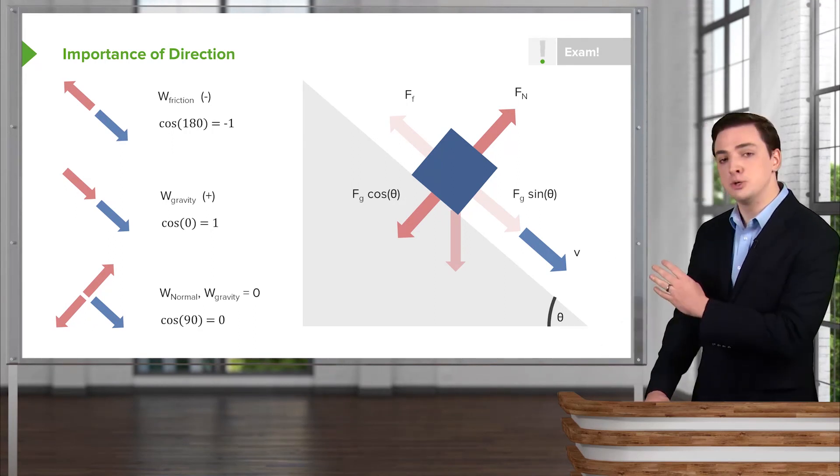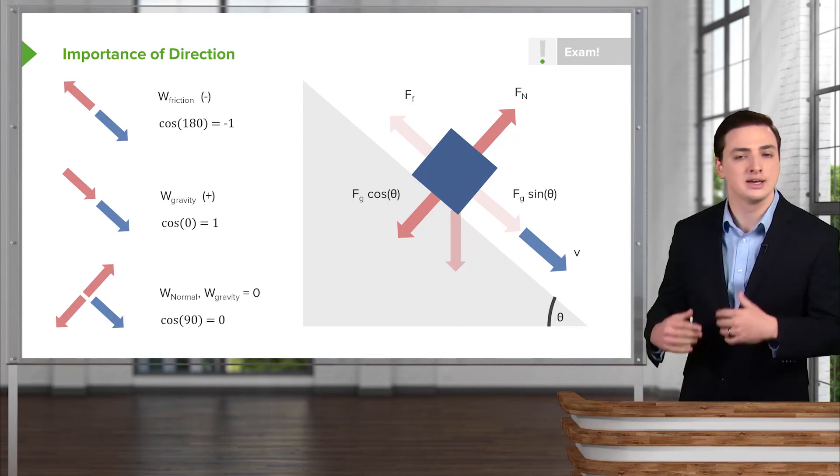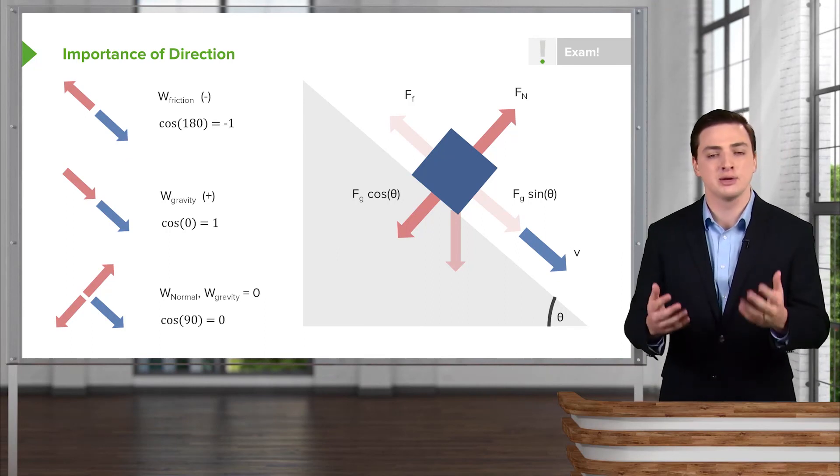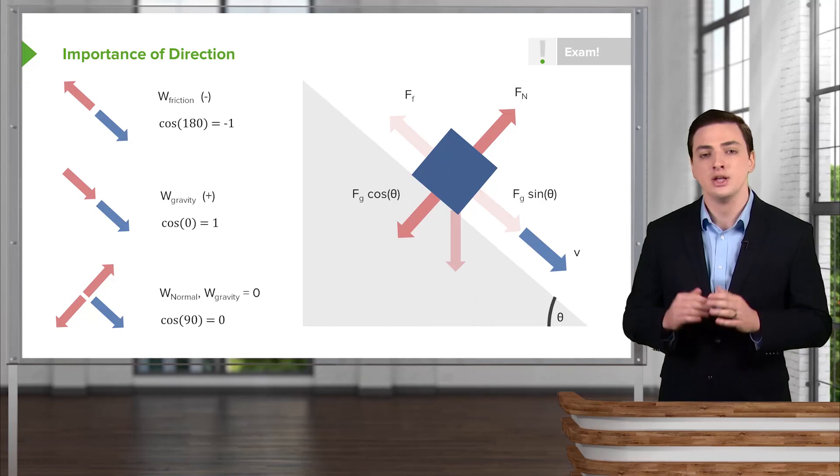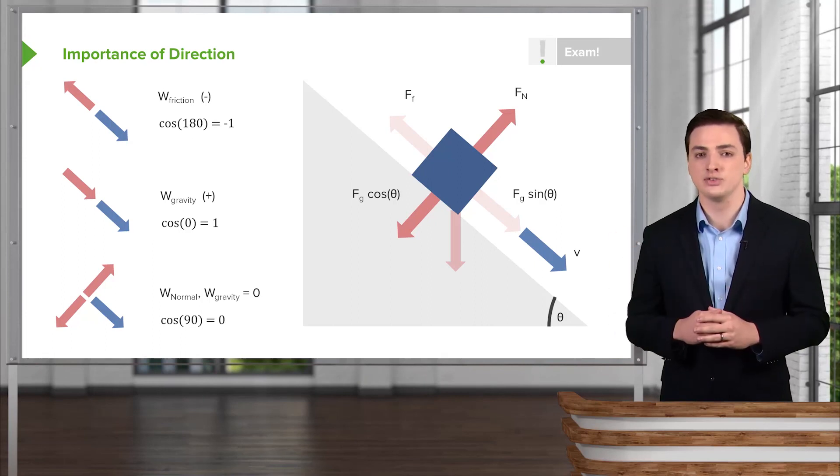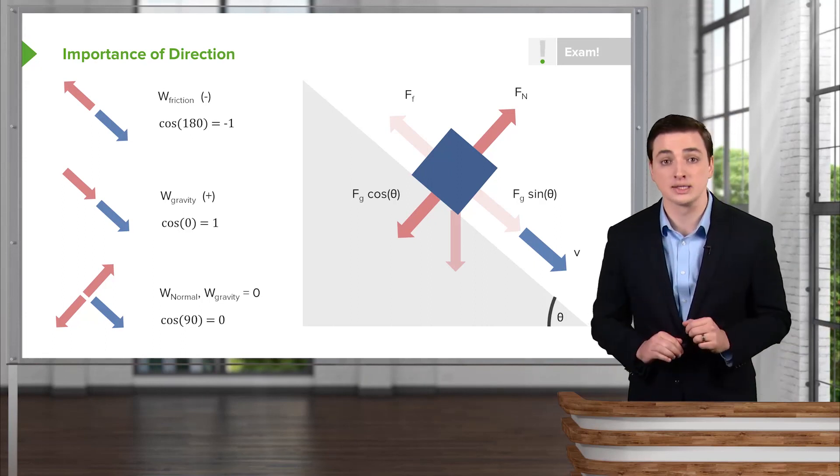In other words, these forces into and out of the slope are doing no work on the object because they're not pushing it to gain kinetic energy, they're not pulling it to stop its kinetic energy. There's no motion in the direction of these forces, and for that reason, there's no work done by these forces.